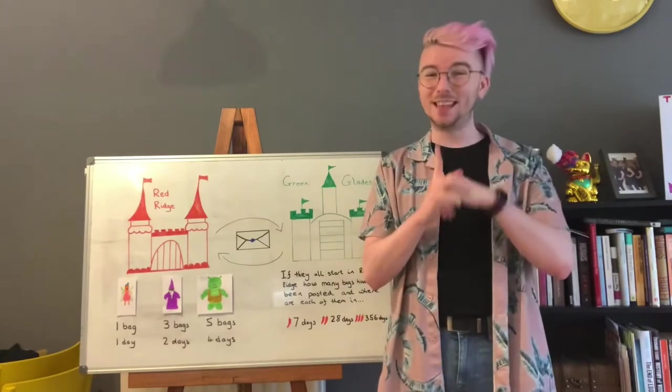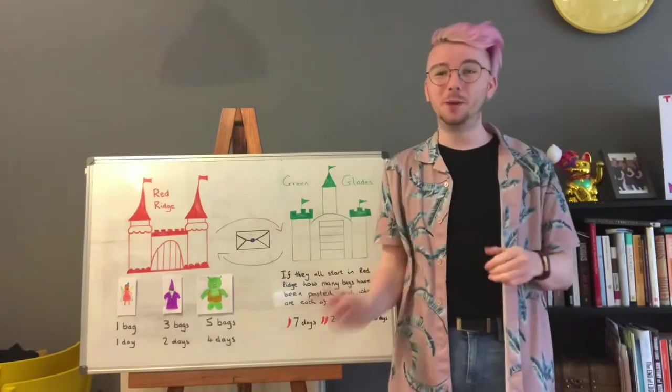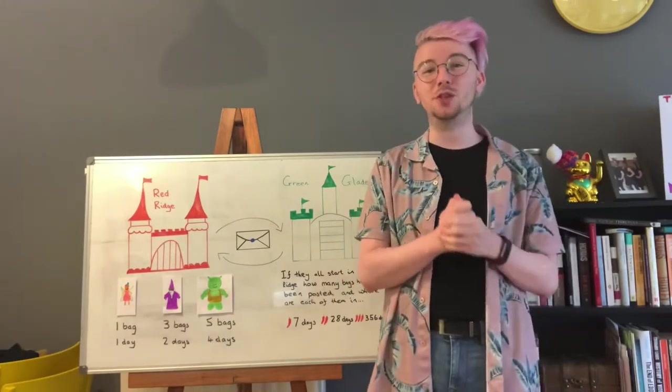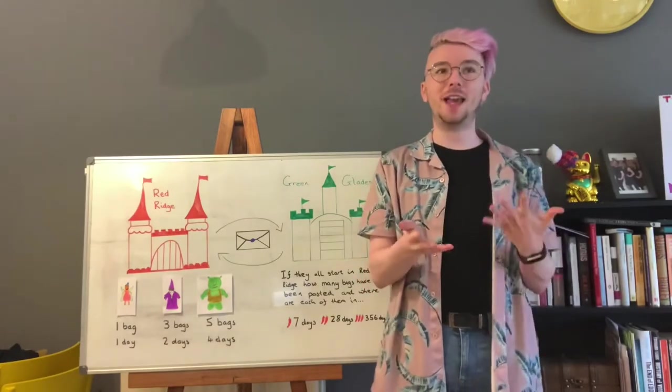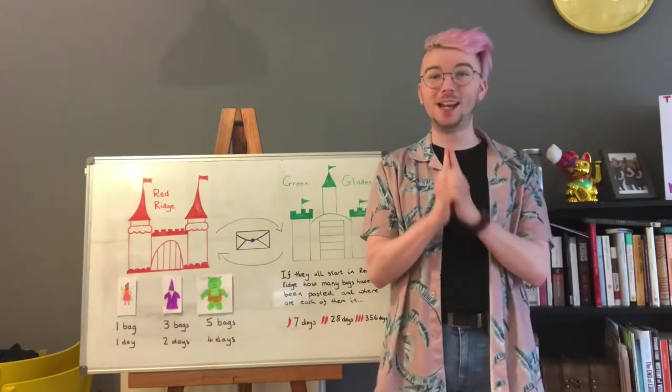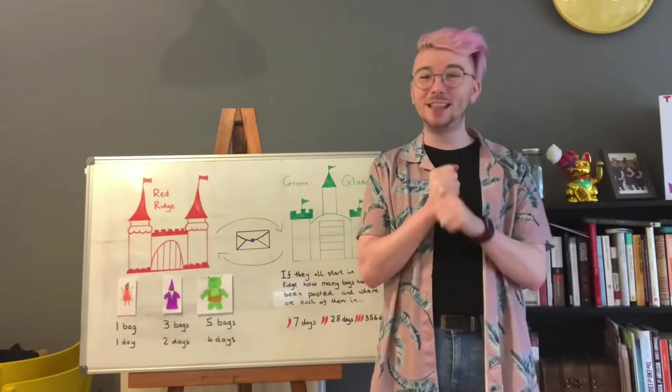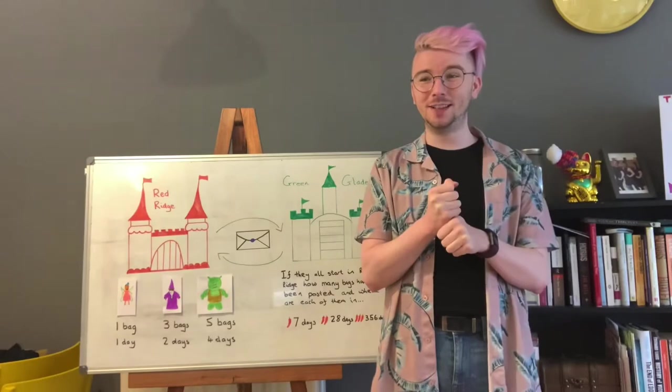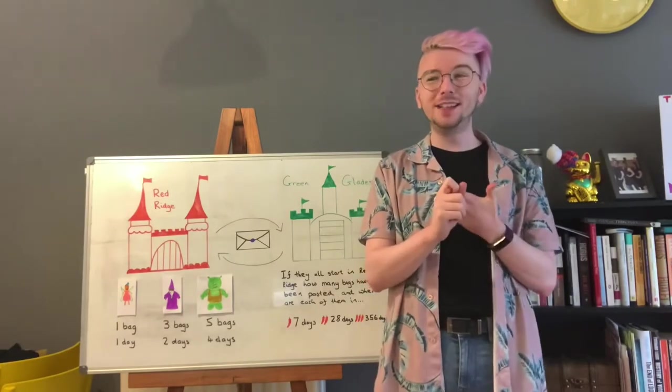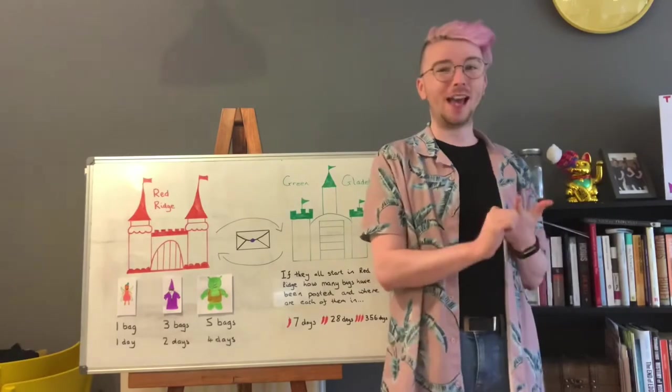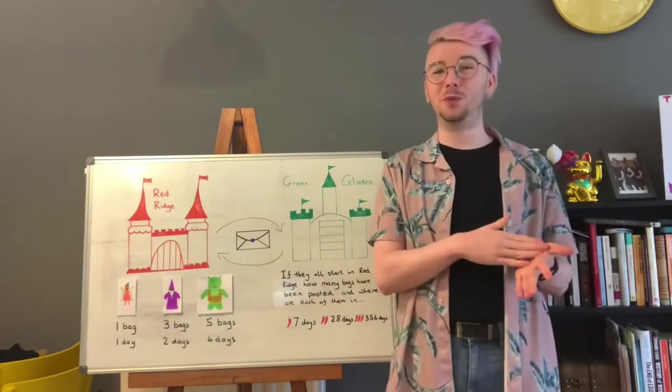Then we need to take that number, 89, and multiply that by five, the number of bags that ogre carries each trip. So 89 multiplied by five is 445. So our fairies have carried 356 bags, our wizards have carried 534 bags, and our ogres have carried 445 bags. That's half of the problem completed.